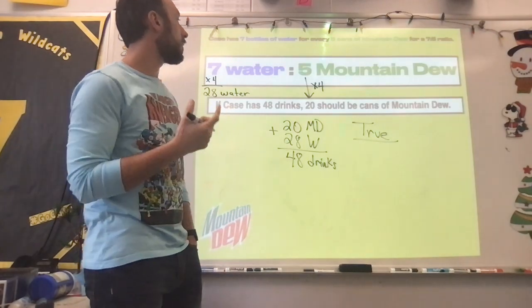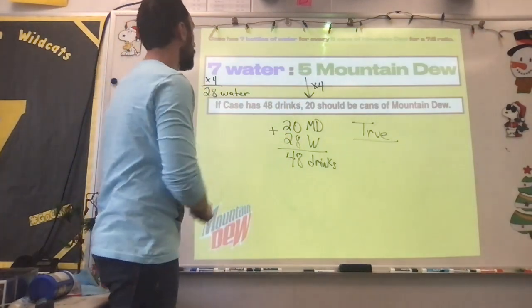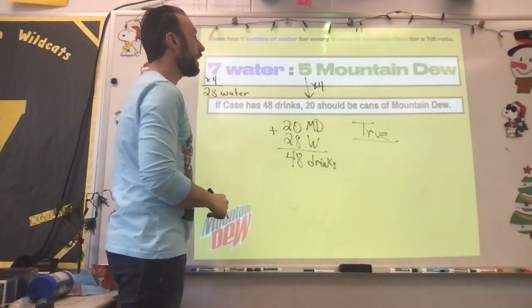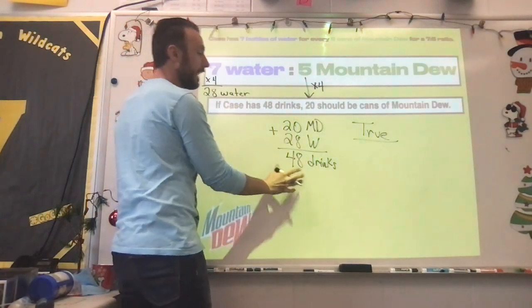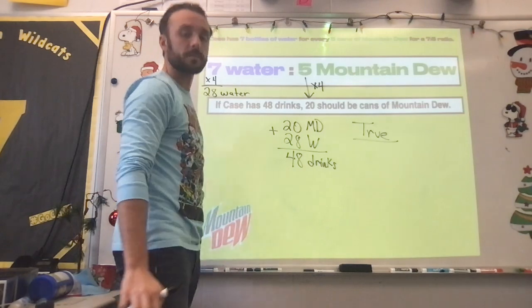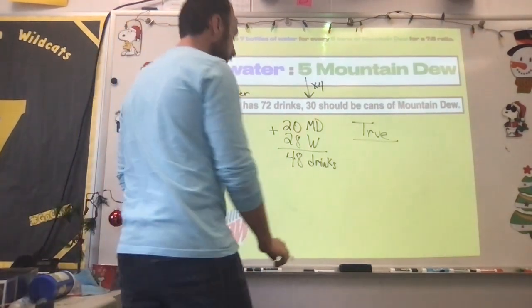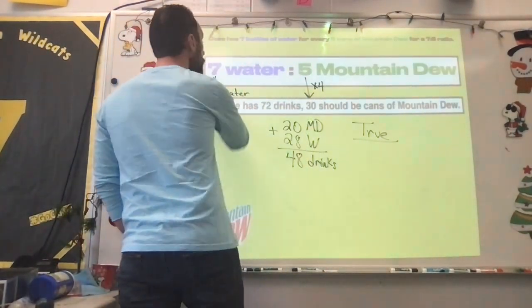So we need to be careful when they can give us words like drinks and combine things to make sure that we don't just say, times four, not times four and done. I keep my Mountain Dews, I add to my waters, and then add those together to figure out how many drinks I need in total. And this one says if Case has 72 drinks,